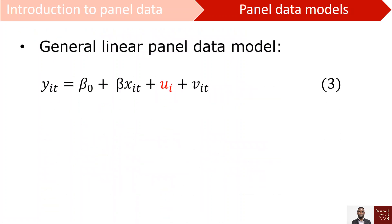Now if we plug in this new breakdown into the model, we will now have u_i plus v_it. And so now this is our general panel data model.